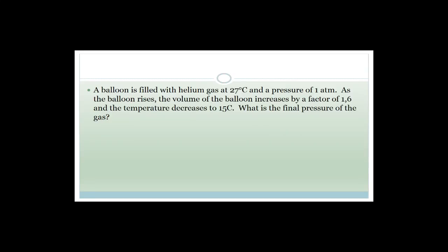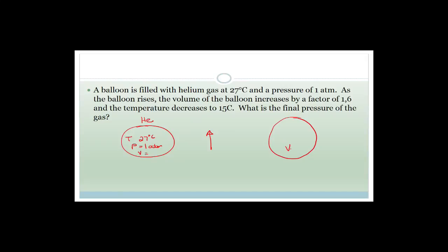So let's do an example. It says a balloon is filled with helium gas at 27 degrees Celsius, which needs to be changed into Kelvin, at a pressure of one atmosphere. The volume of the balloon increases by a factor of 1.6 as the balloon rises. If we let the volume be V, then V_new is going to be 1.6 times the original volume. The temperature has decreased to 15 degrees Celsius, and we want to know what is the final pressure.